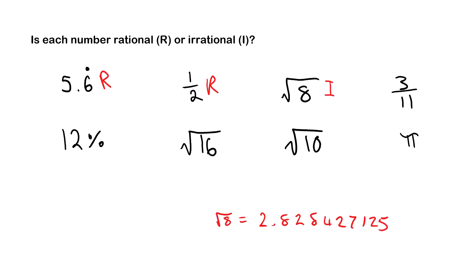Three over eleven is a fraction, so it is rational. 12% is a percentage, so it is also rational. Root 16 equals 4, so it is rational. Root 10 is irrational. And pi, because it is a symbol representing a non-terminating non-repeating value, is also irrational.